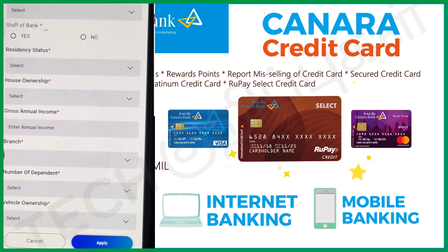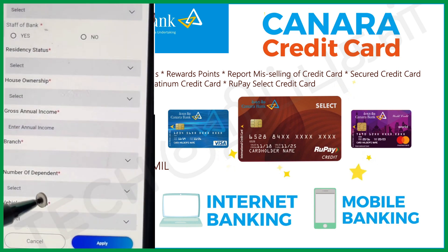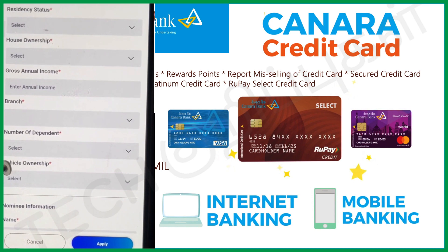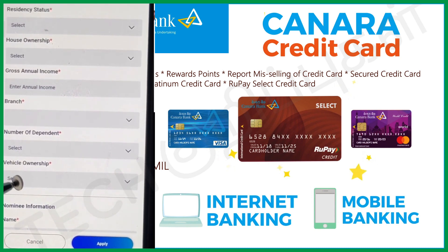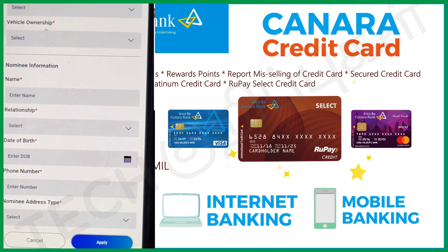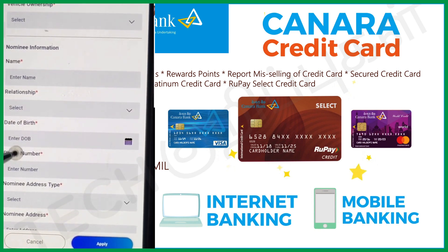You can select the number of dependents. Dependents means the number of family members dependent on you, such as a spouse. If you have vehicle ownership, you can also mention a vehicle. Then fill in your name, your relationship, phone number, and address type.